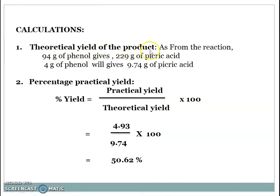Calculation - theoretical yield of the product: As from the reaction, 94 grams of phenol gives 229 grams of picric acid. 4 grams of phenol will give 9.74 grams of picric acid. Therefore percentage practical yield can be calculated by percent yield equals practical yield divided by theoretical yield into 100. Put values into this formula so we get the percent practical yield. Practical yield is 4.93 divided by theoretical yield 9.74 into 100 equals 50.62%.